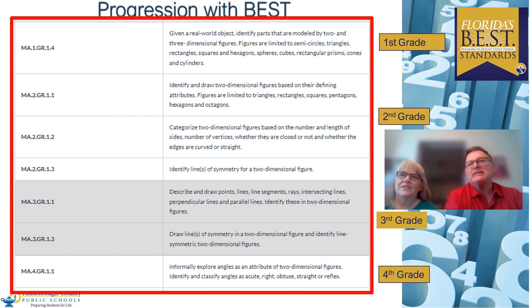So before we actually take a look at that problem that you just solved, let's look at the progressions with BEST considering third grade. In first and second grade, they are given real-world objects and identify parts of 2D and 3D figures with limitations on figures. In second grade, they are identifying and drawing 2D figures based on defining attributes. They begin categorizing in second grade and also identify lines of symmetry for a two-dimensional figure. And that is new to second and third grade.